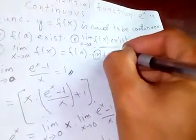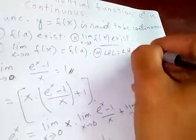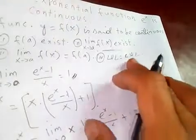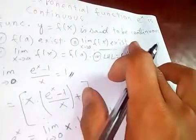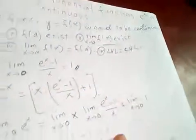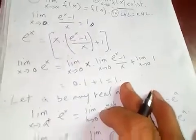If the left-hand limit is equal to the right-hand limit, then the function is continuous. And that's it.